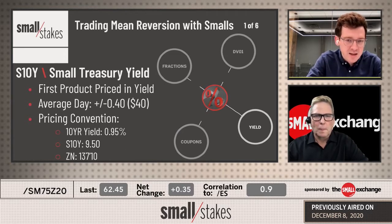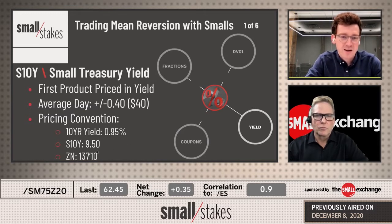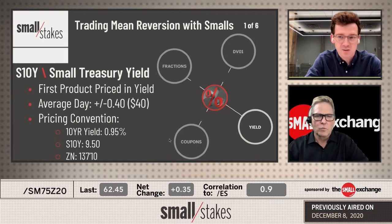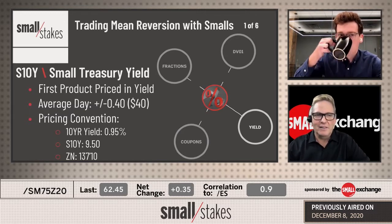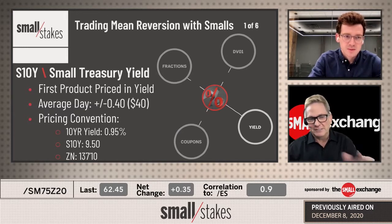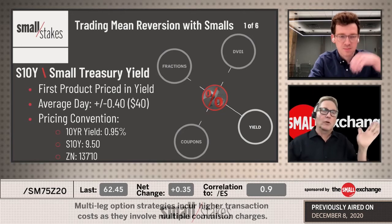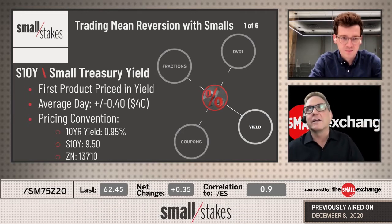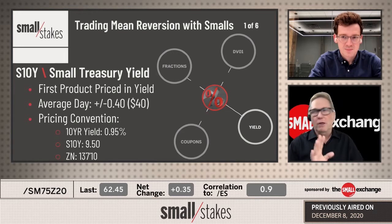It's as simple as: you see the 10-year yield at 95 basis points, or 0.95%, and our product is going to look very similar — $9.50 — fluctuating with that yield. As opposed to ZN, the 10-year treasury future, where 95 basis points in yield relates to $137 and 10/32nds. The binary decision is simple: if I think something's going higher, I buy it; if lower, I sell it. That's the simplification of trading rates, where previously you'd start with the inverse relationship and lose everybody.